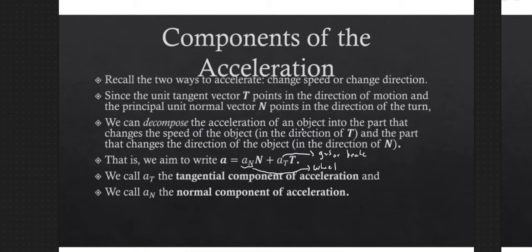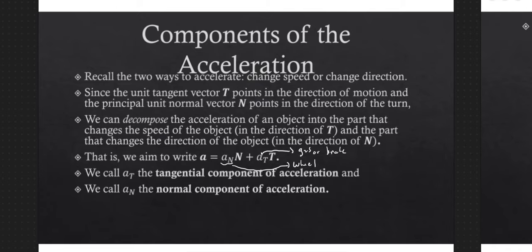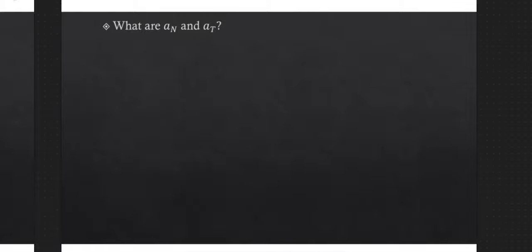What we need to do is decompose acceleration into those two quantities — some scalar multiple of N plus some scalar multiple of the unit tangent vector T. How can we figure out what a_N and a_T are? One way is to project the acceleration vector onto the unit normal vector — find the unit tangent vector, do a projection, then find the missing component. But there's actually a more clever way to find a_N and a_T, and I'm going to run through that derivation here.